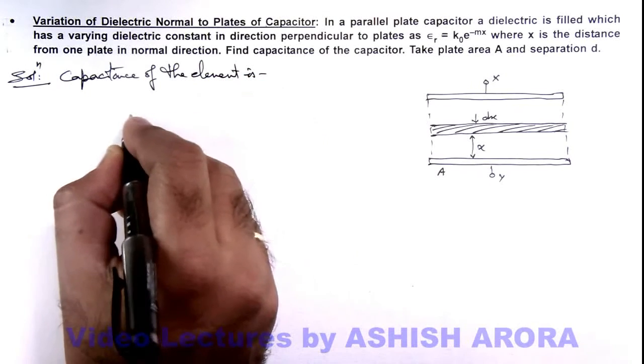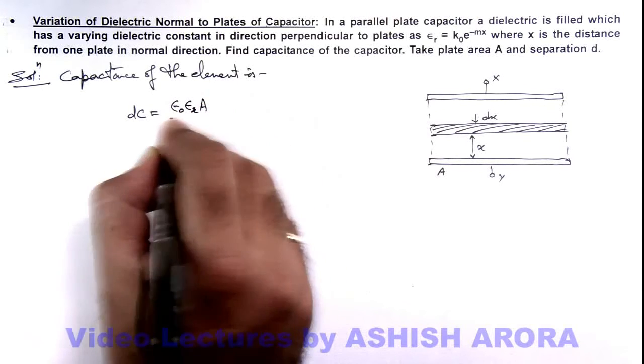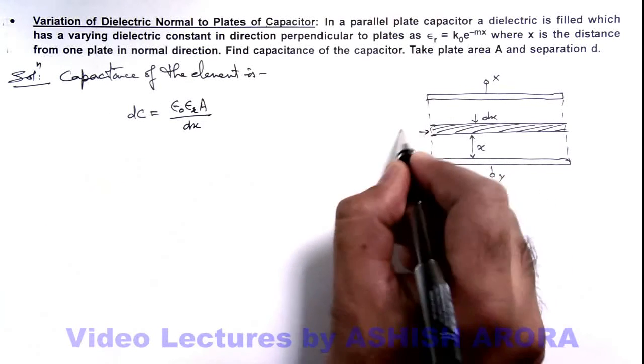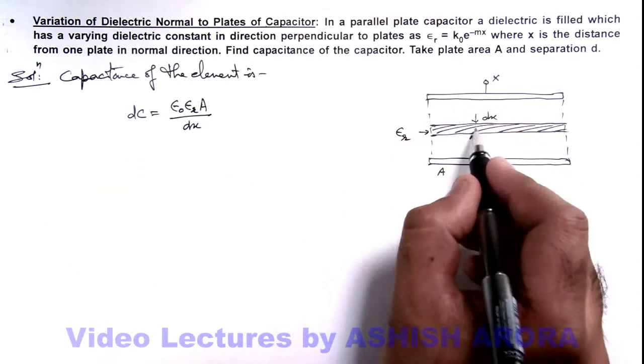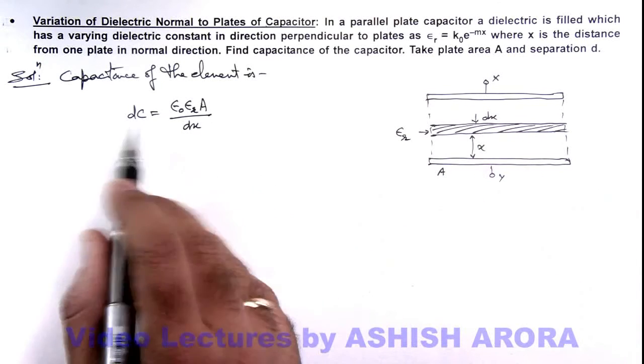This capacitance dC we can write as epsilon_0 epsilon_r A by dx. Because here dielectric constant can be taken as epsilon_r because for this small distance dx we can consider epsilon_r to be a constant.